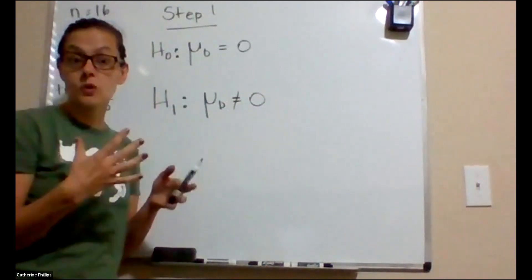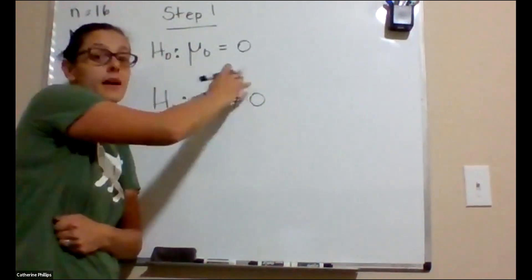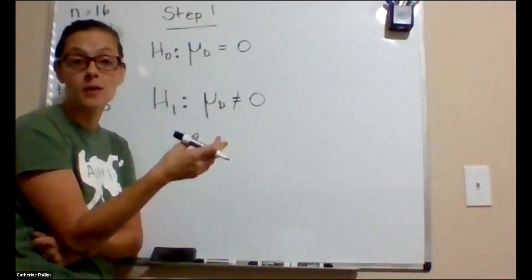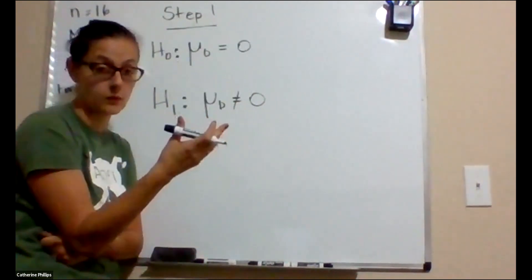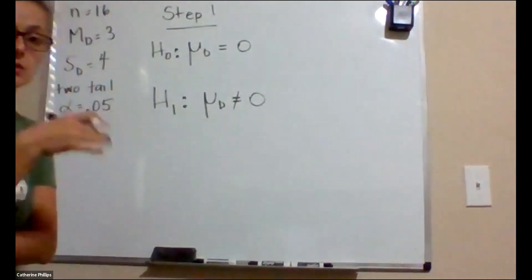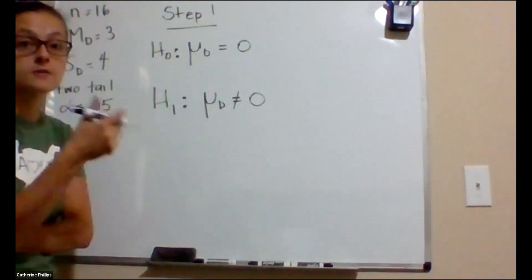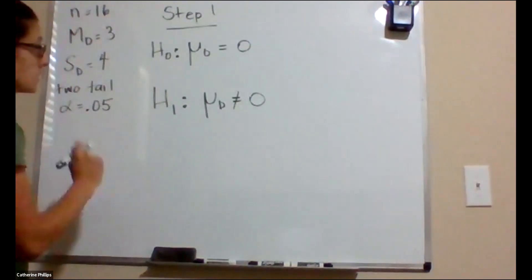The alternative is that it's not equal to zero. So whatever treatment we've done, if it has no effect, then the difference between the initial measurement and the other measurement is zero if they're the same value. So mu d equals zero for null. Mu d does not equal zero for our alternative because it's a two-tailed test.